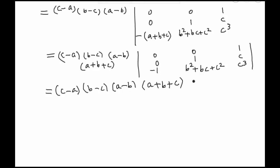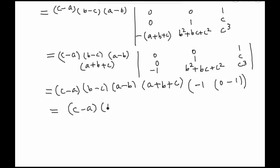Expanding along column 1, the resulting 1×1 determinant evaluates to 1 after accounting for the sign factors (each giving -1, and their product giving +1 overall). Therefore the final answer is (c - a)(b - c)(a - b)(a + b + c), which equals the right-hand side. Hence proved.